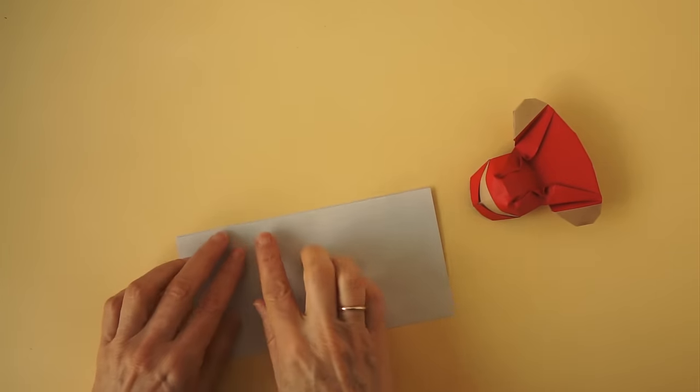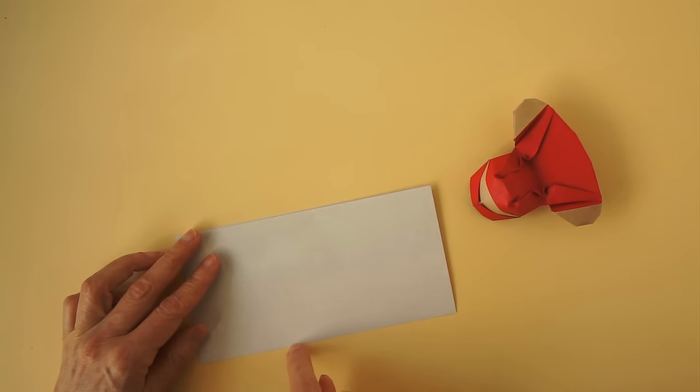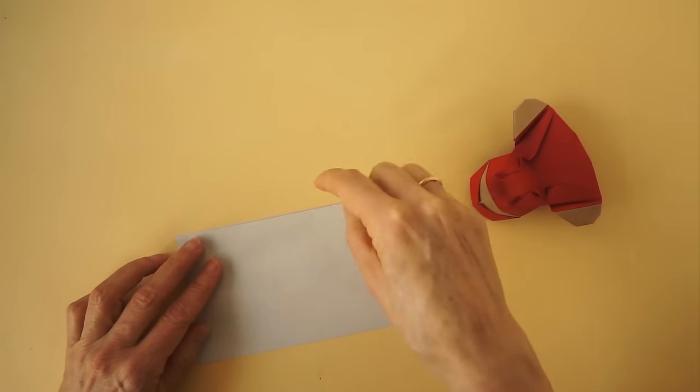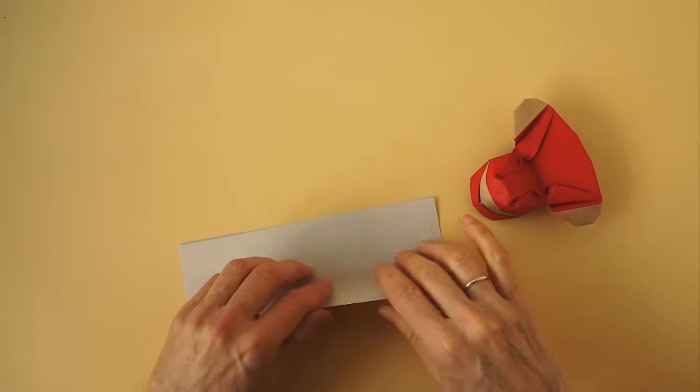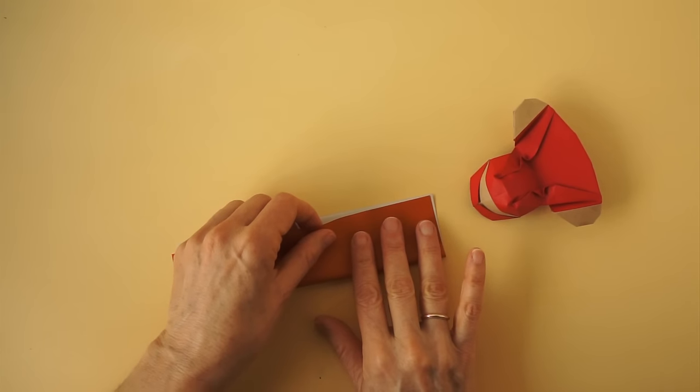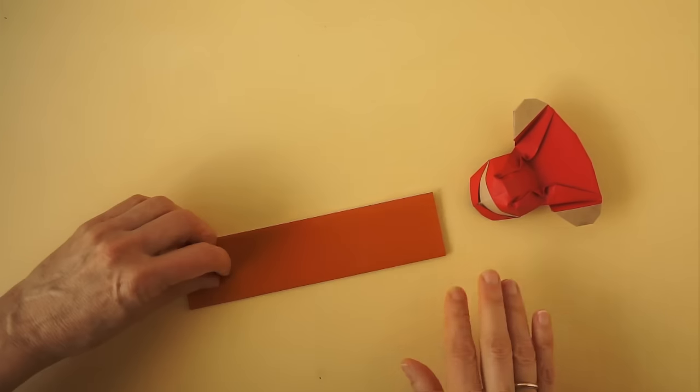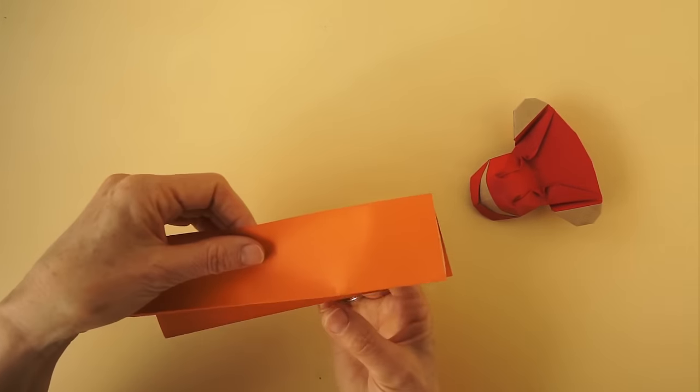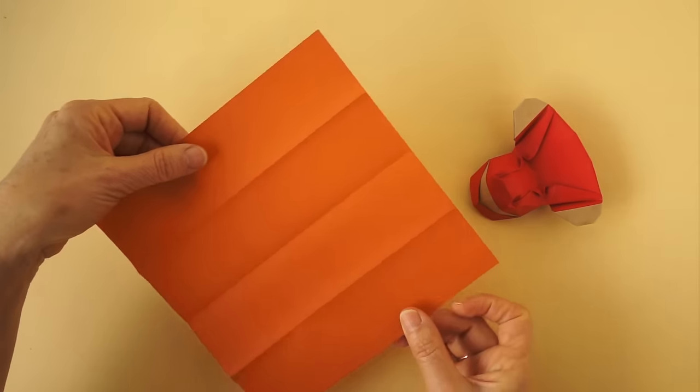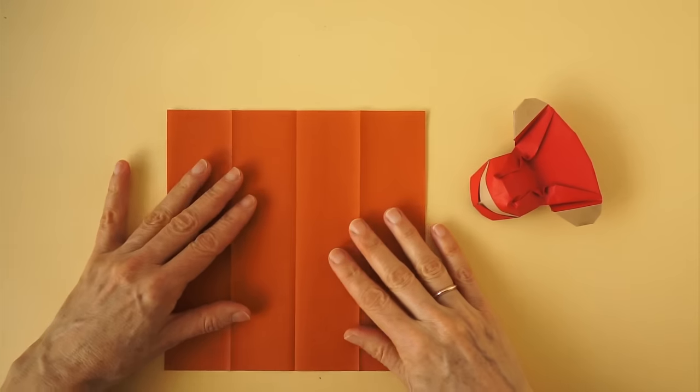Turn it over. We are going to bring this edge to match the raw edge, just beyond the folded edge. Unfold to the brown side. Rotate this way.